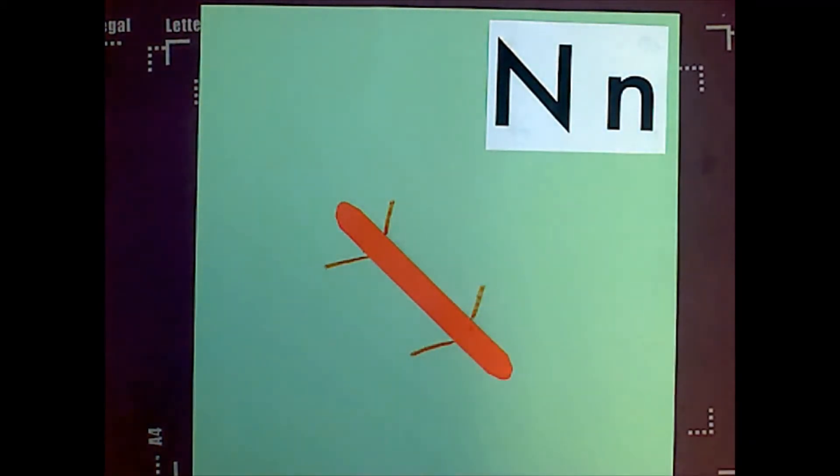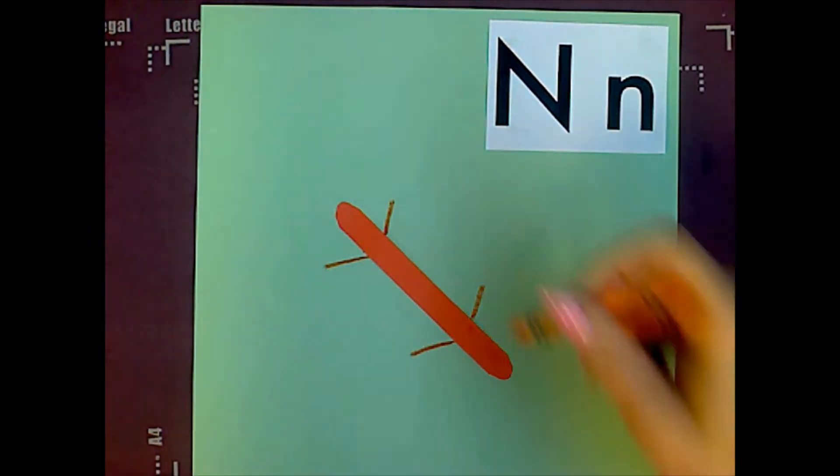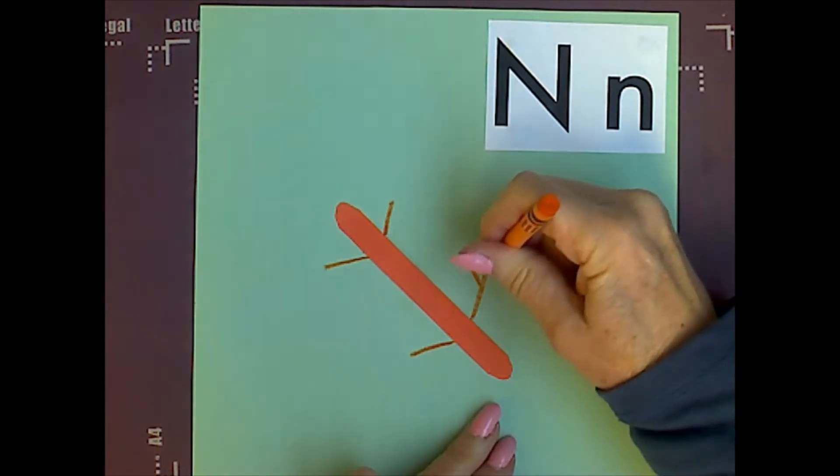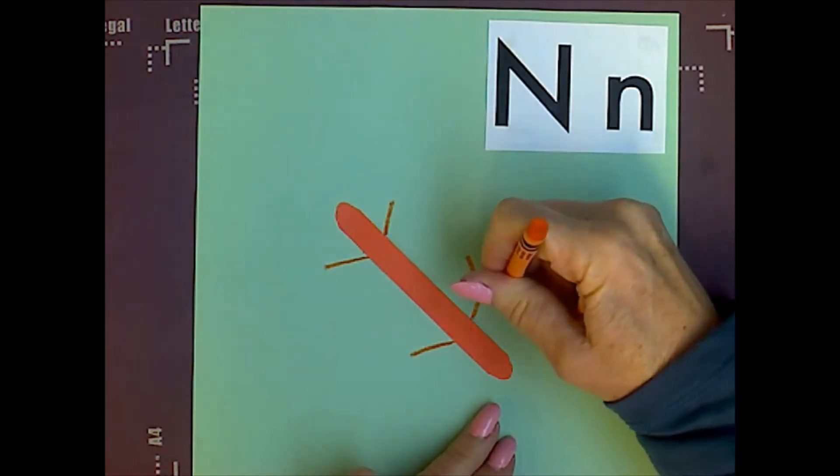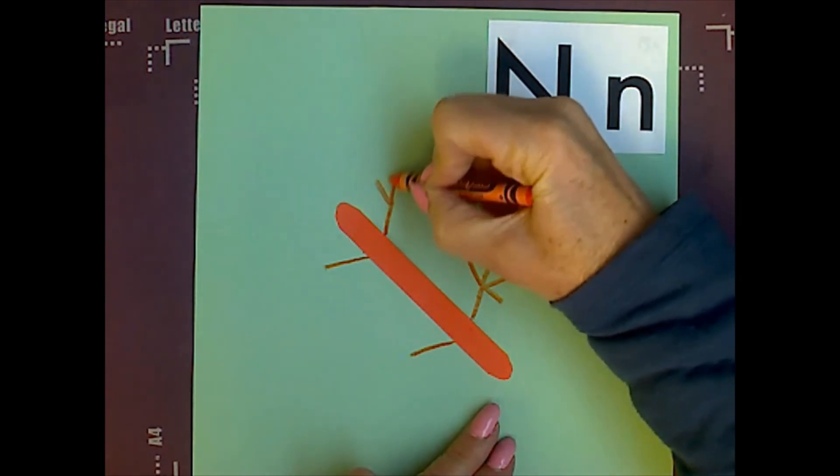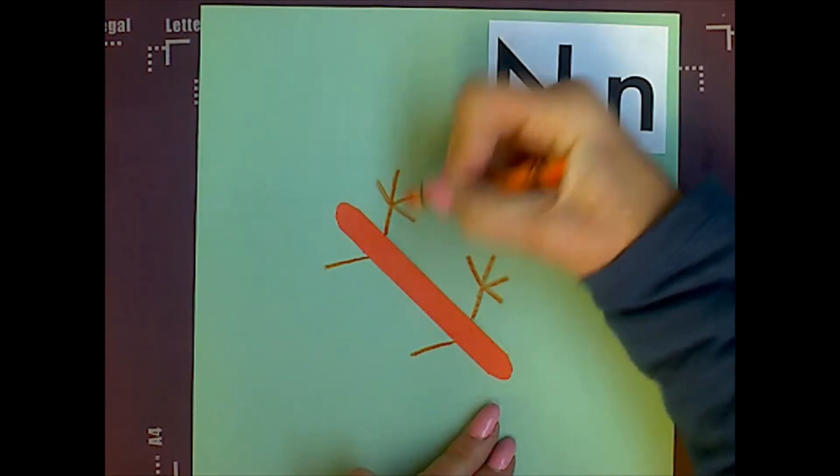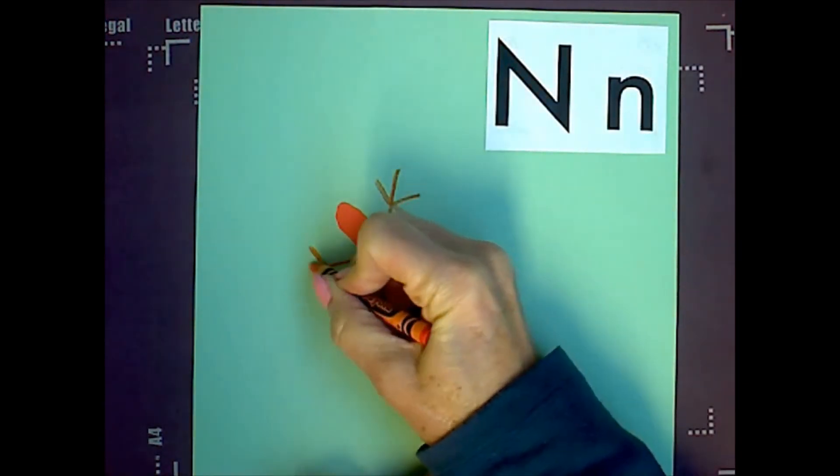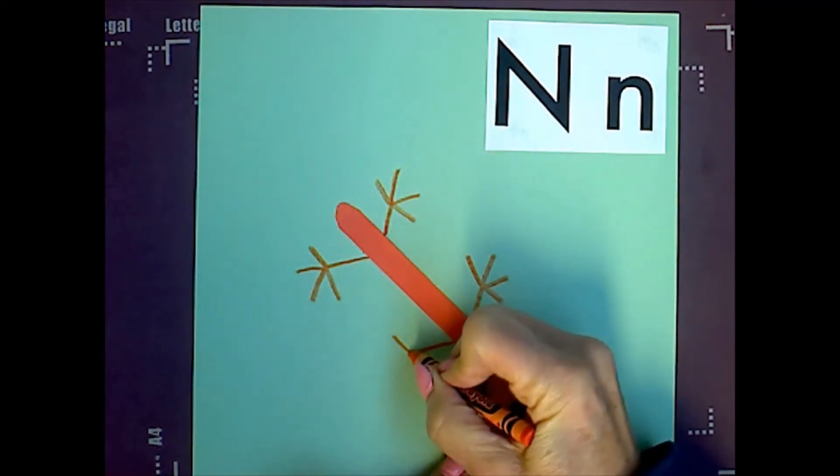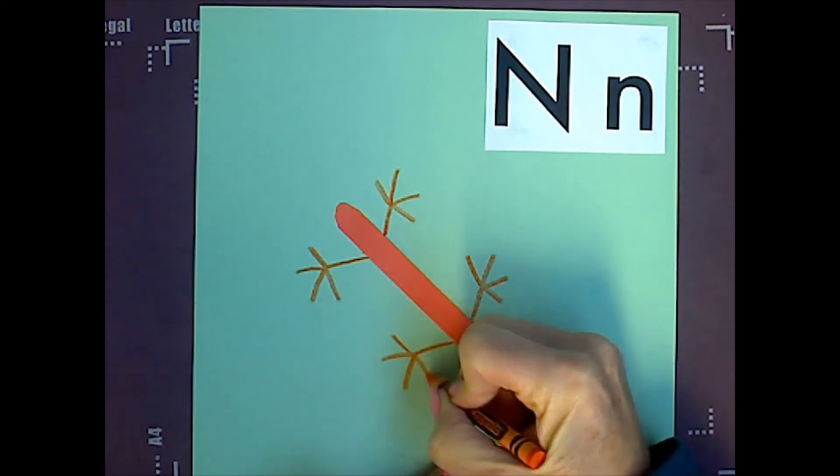And then at the end of each leg, I'm going to put four toes: one, two, three, four. Not five, four. One, two, three, four on each leg.